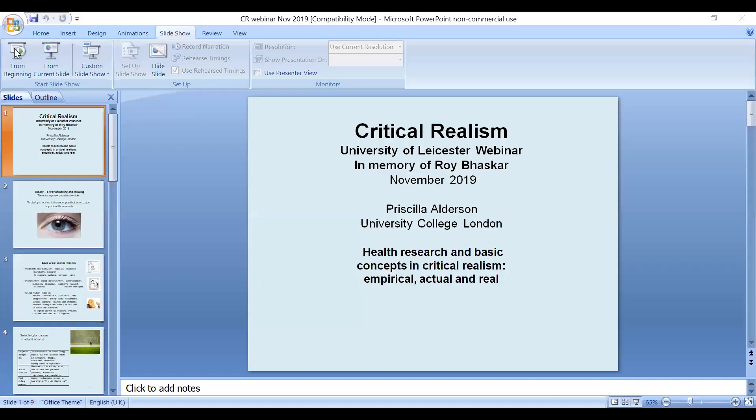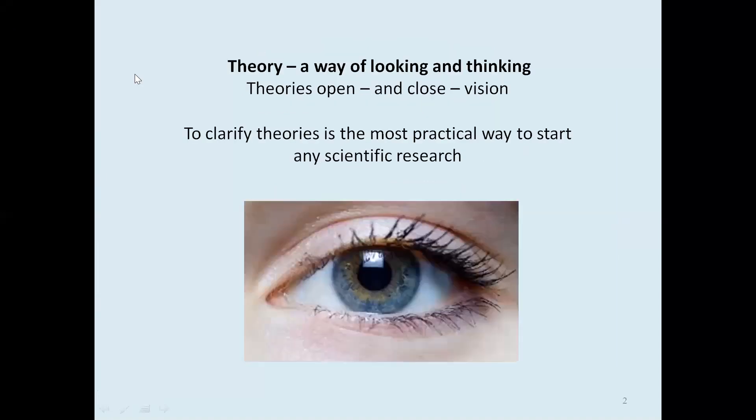When I begin the course I begin with the most basic idea in critical realism — perhaps quite simple, and yet it's also profound and confusing, and I think we could spend a lifetime thinking about it. Critical realism's greatest strength and contribution is theory — a way of looking and thinking — and theories open and close our vision. For instance, until the 1970s everyone tended to be racist and sexist, many were eugenic, without really being aware that that was the theory driving their work. It's most important, then, when starting research, to clarify our theories and our hidden assumptions.